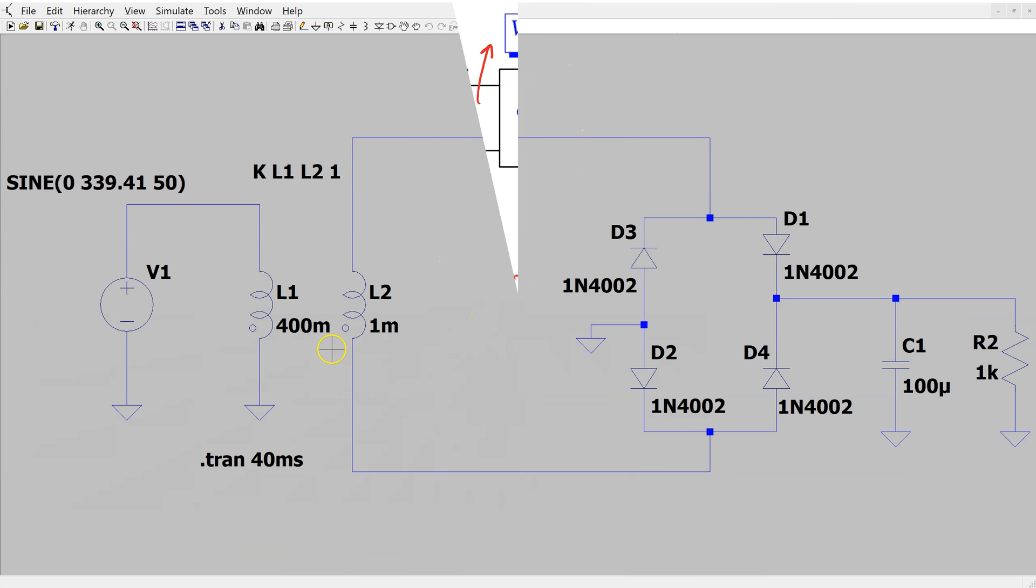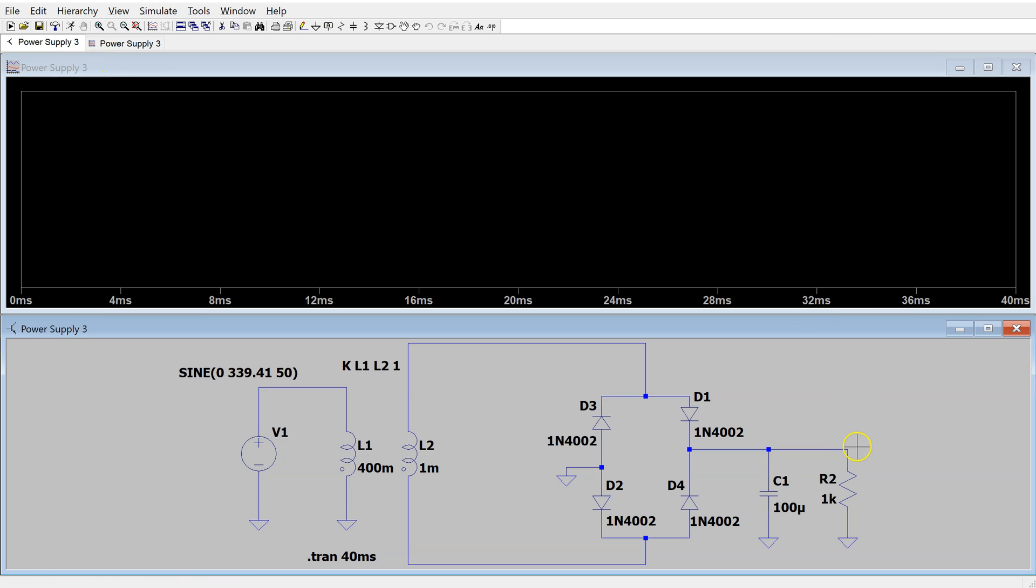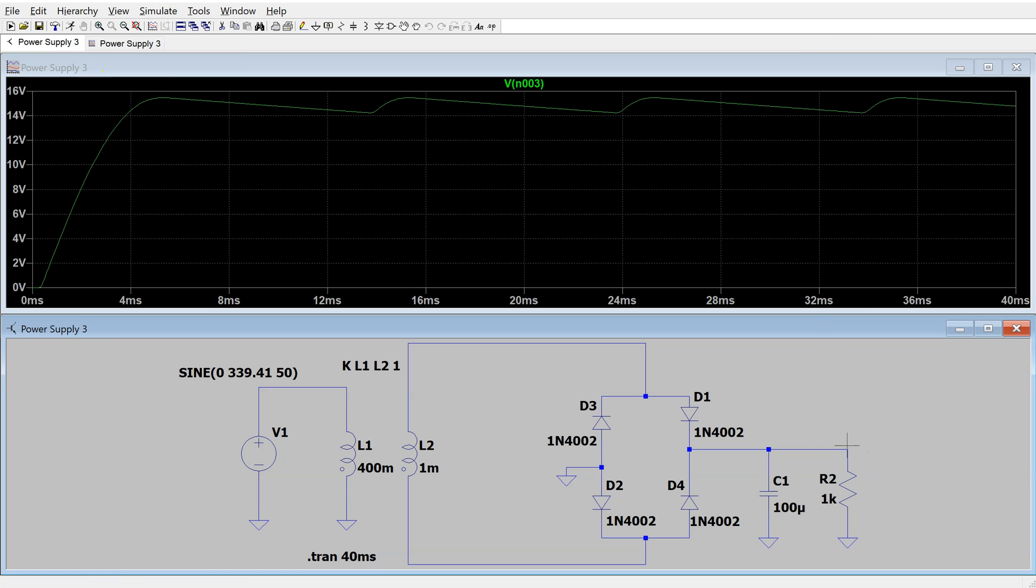This is showing the transformer, bridge rectifier, and smoothing capacitor filter. When we simulate, we can see the smoothed DC output voltage waveform, which has a ripple. This initial part of the curve is the transient when the circuit is first switched on. After the initial transient, we have a periodic ripple.